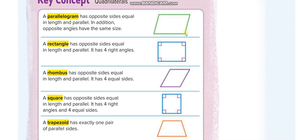A rhombus also has all the characteristics of a parallelogram — opposite sides are equal in length and parallel. The additional characteristic of a rhombus is that all four sides are of the same length. So when you see a rhombus, you can call it a parallelogram, but you cannot call a parallelogram a rhombus.